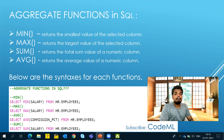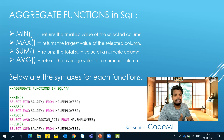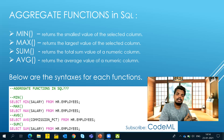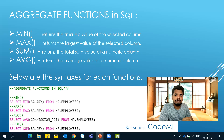SUM will only work on a numerical column, since summing is only possible for numeric data. It takes all the values of the specified column, sums them, and returns the output. AVG returns the average value of a numerical column.